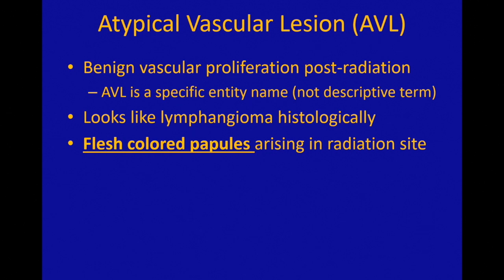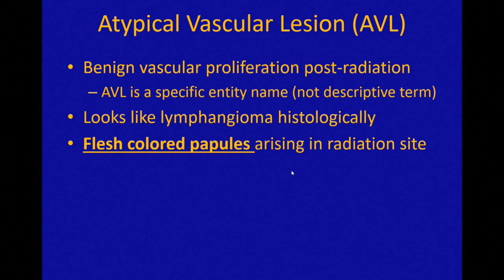Clinically, this is the most important thing about AVL. These usually look like small flesh-colored papules arising within the radiation site, as opposed to angiosarcoma, which presents with purpura and large nodules or plaques. The clinical picture is hugely important in helping distinguish between AVL and a subtle angiosarcoma.